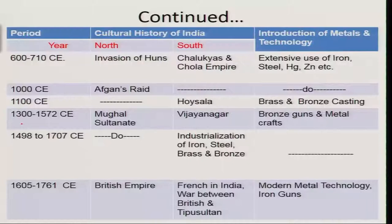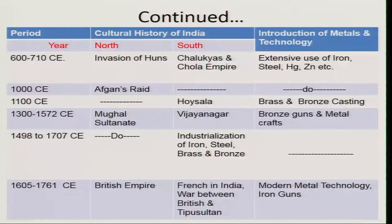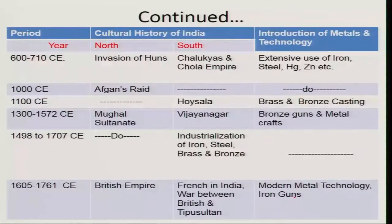During 1300 to 1572, the Mughal Sultani was in northern India while the Vijayanagara empire was in the south, and both were using metals and metal crafts for war, making guns, and for jewelry and other day-to-day materials. Later on, from 1498 to 1707, there was industrialization of iron, steel, brass, and bronze. The British and French entered the picture, and there was a war between the British and Tipu Sultan during 1605 to 1761. In the British empire period, modern metal technology was used for making rockets and iron guns. Metal and metallurgy was a part and parcel of Indian life in ancient times.